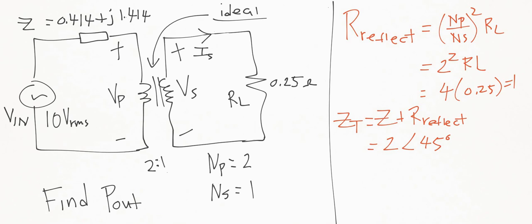So now you can find the current of the primary as simply V over ZT. That'd be Vin over ZT - that's 10 divided by 2, and that gives us 5 amps.